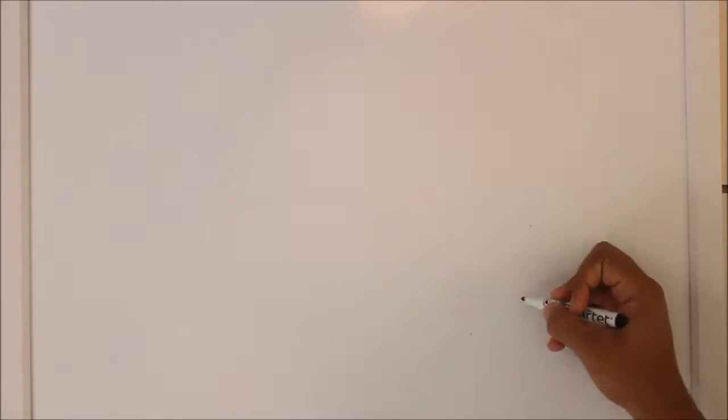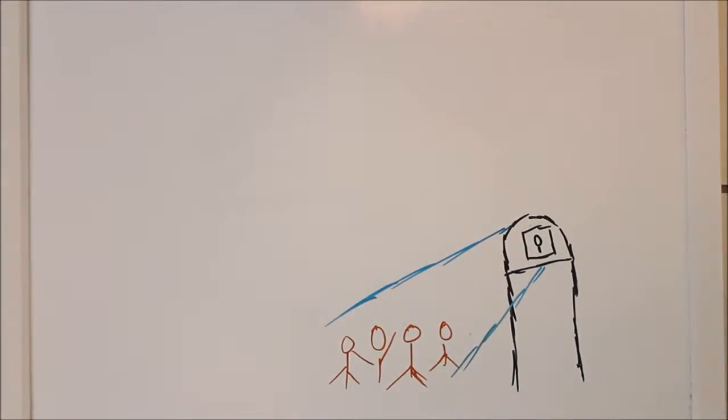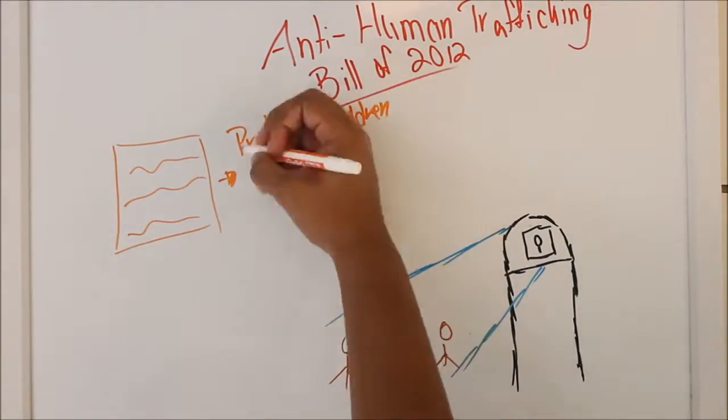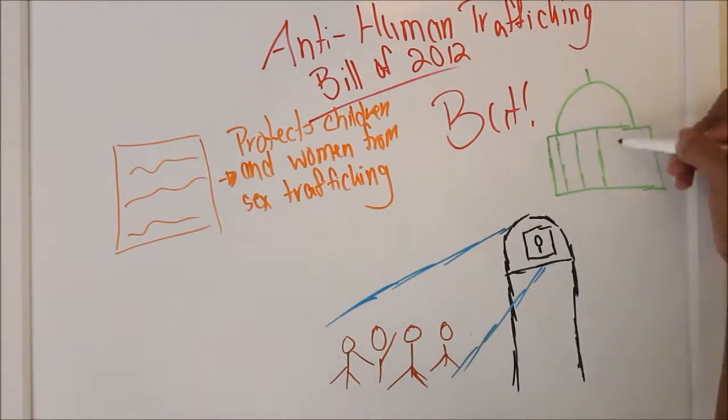An instance of political gridlock superseding the interests of the people in America is the case of the Anti-Human Trafficking Bill of 2012. This bill would protect children and women from sex trafficking by providing stringent laws to combat its presence in America.